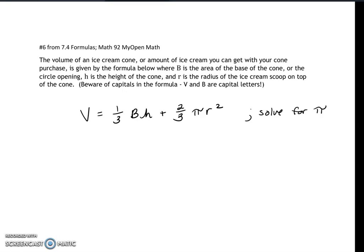This video is from the MyOpenMath problem number six from solving out for formulas or literal equations. The volume of an ice cream cone, or amount of ice cream you can get with your cone purchase, is given by the formula below where B is the area of the base of the cone or the circle opening.